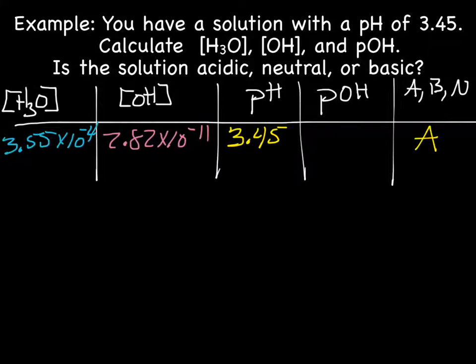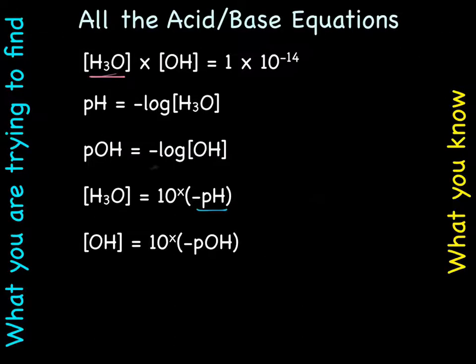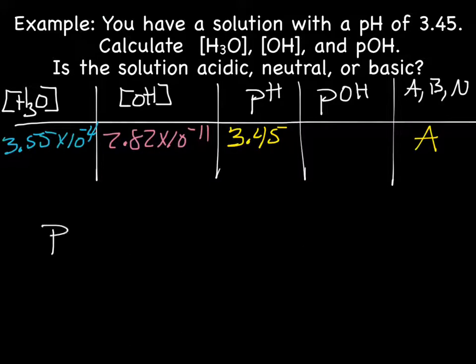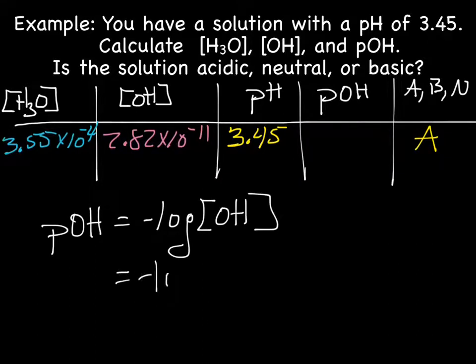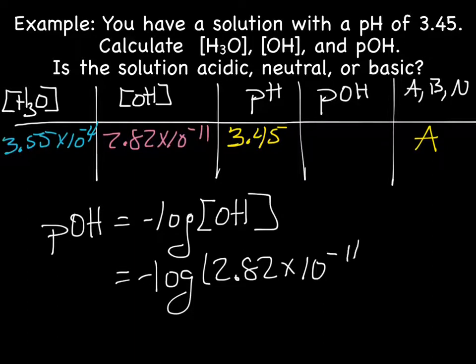So the only thing left we need to find out is pOH. Let's see. To find pOH, I can use negative log of OH. So pOH equals the negative log of concentration of OH. pOH equals the negative log of 2.82 times 10 to the negative 11th, which gives us a pOH of 10.5.